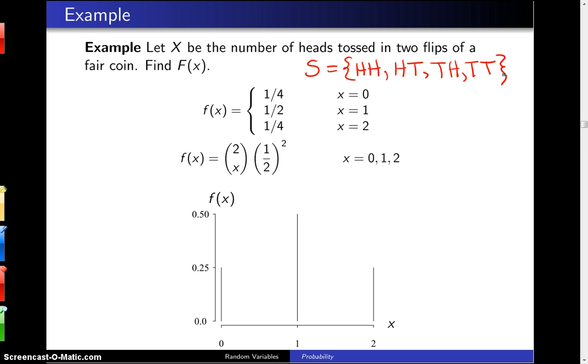So if you count the number of heads that are appearing, there is a 1 in 4 probability that you will have two heads. There is a 1 in 2 probability that you will have one head. And there is a 1 in 4 probability that you will have zero heads.